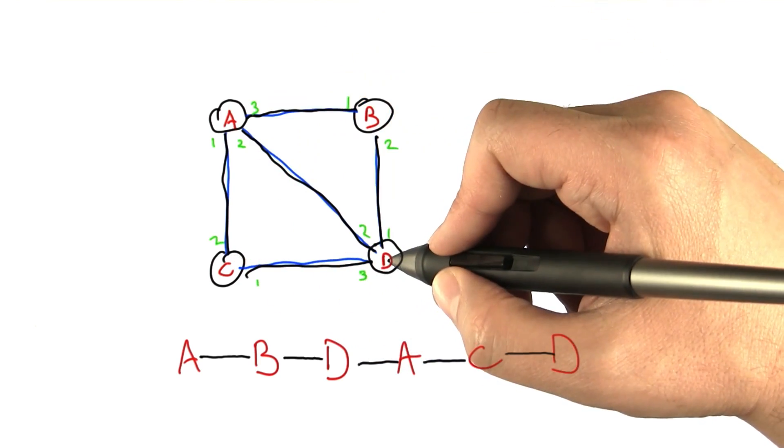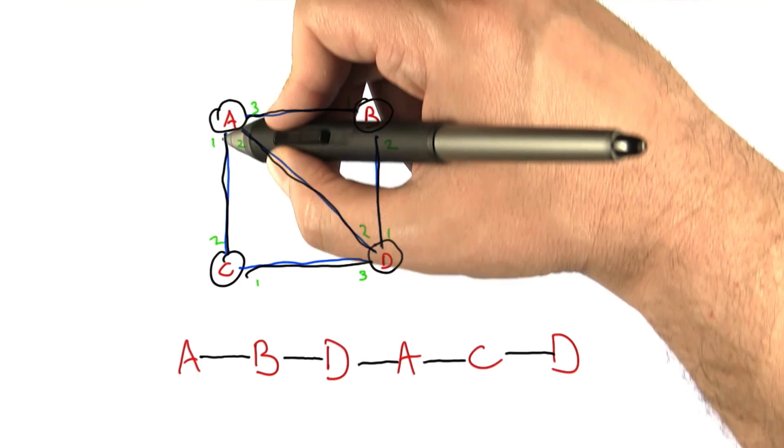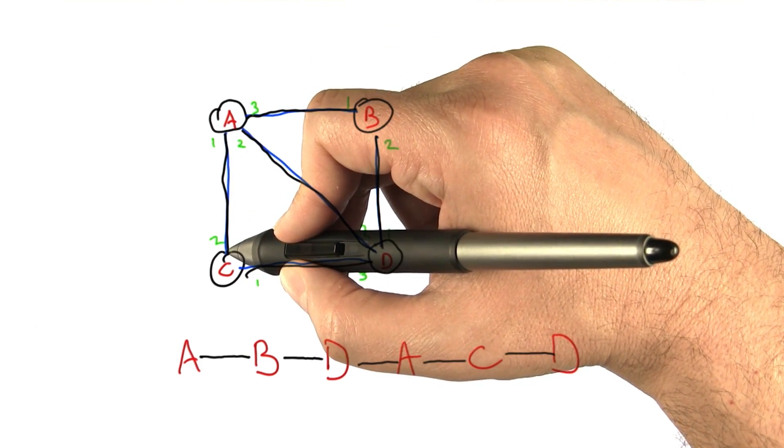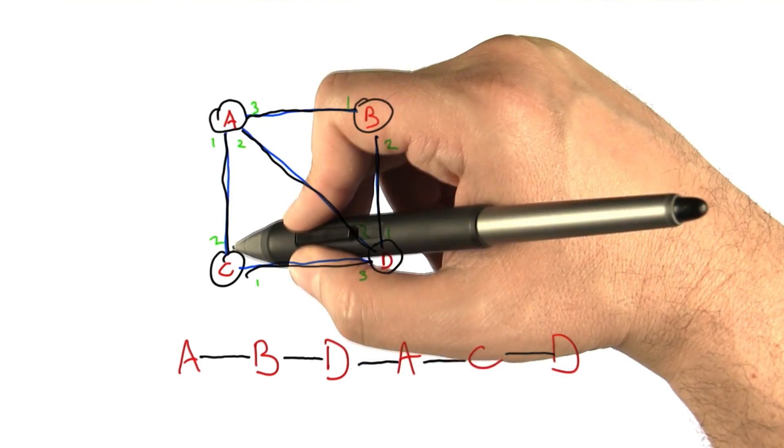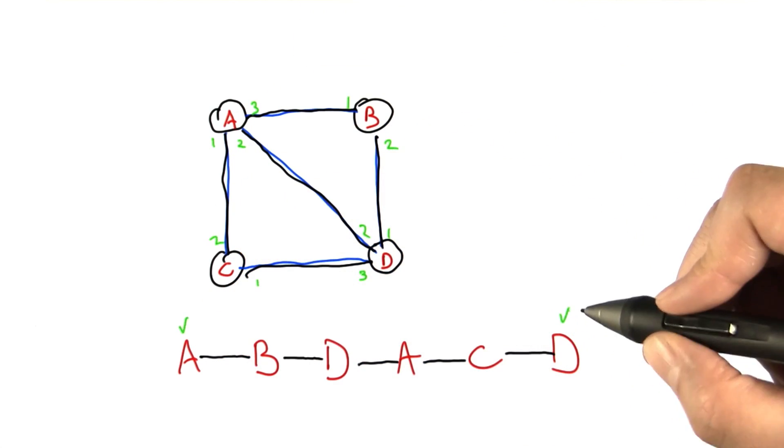The beginning and ending nodes are different though. The path starts off at A and it leaves A along one of the edges and that consumes one of those edges. And so the beginning and ending nodes, A and D in this case, have to have odd degree.